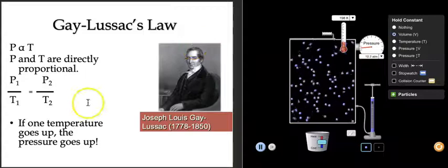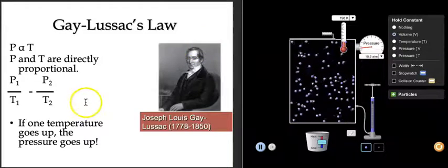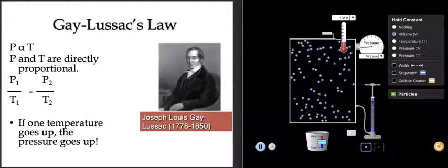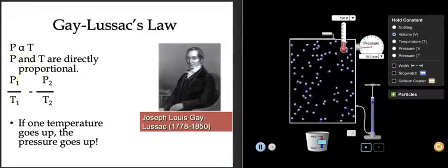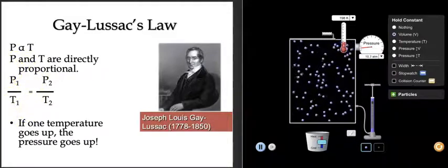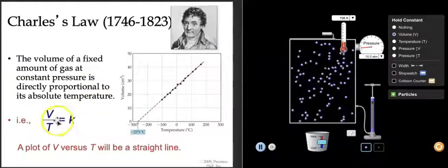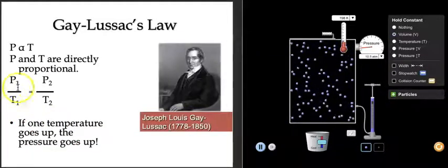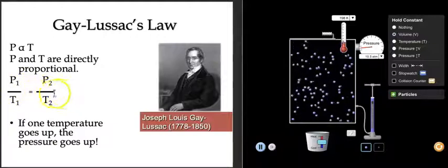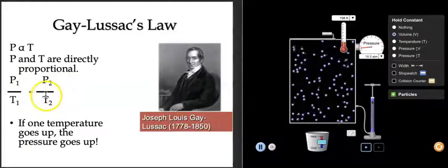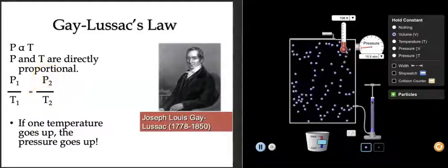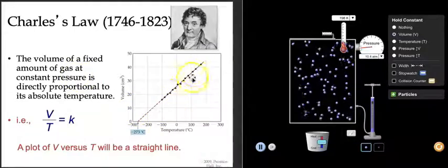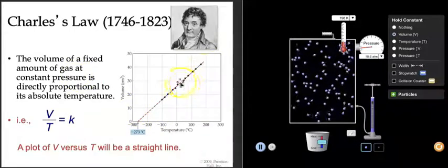So what we have here are two direct relationships: as one increases the other increases, as one decreases the other decreases. Notice the way we show this mathematically — it turns out direct relationships are shown as a division: P over T equals a constant, just like V over T equals a constant. Anytime you see two variables divided and equal to a constant, that is what a direct relationship looks like.